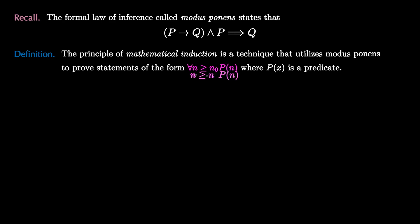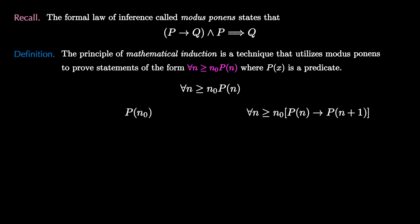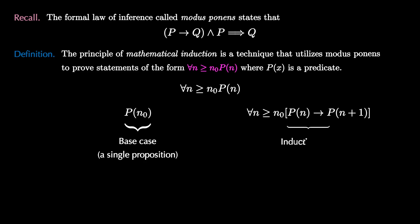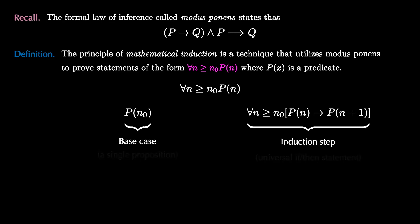The technique takes the proposition we want to prove — for all n greater than or equal to n zero, p of n — and splits it into two separate steps. The first step is to prove p of n zero. This is called the base case, and it is a single proposition. The second step is called the inductive step, which is a proof of a universal conditional statement: for all n greater than or equal to n zero, p of n implies p of n plus one.